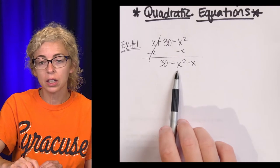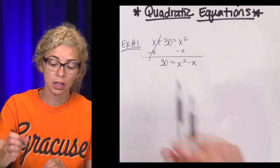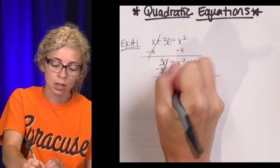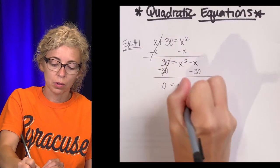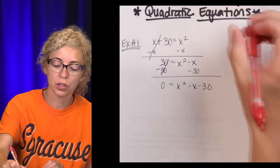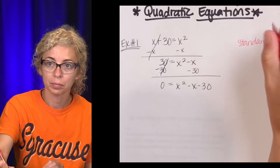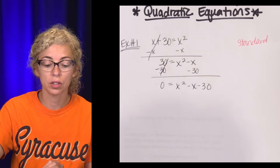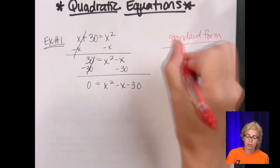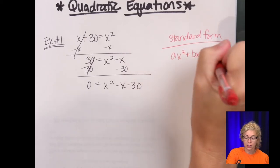For quadratic, standard form means set equal to zero. We typically do prefer the x squared to be positive, if at all possible, but it doesn't have to be. So let's subtract the 30 to finish this. And we get zero equals x squared minus x minus 30.